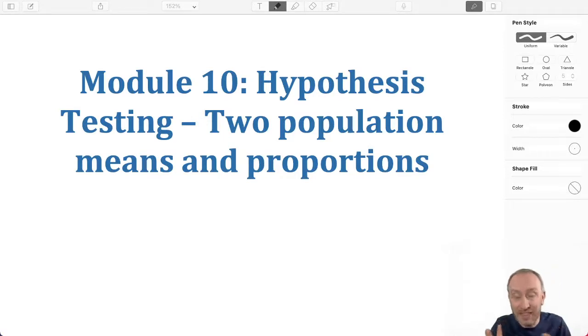Now some of the similarities that we will encounter here in Module 10 when we're looking at Two Population Testing is the process. The process of hypothesis testing is the same: specify your null and alternative hypotheses, your level of significance, calculate a test statistic, find a p-value or critical value, draw your conclusion, and then interpret what that conclusion means. If you got lots of practice doing that in Module 9, you're going to be doing the same thing now in Module 10.